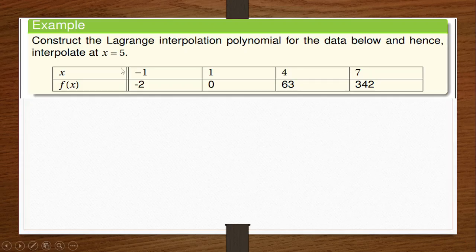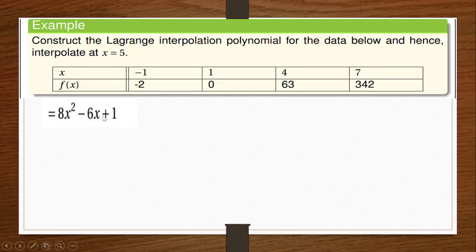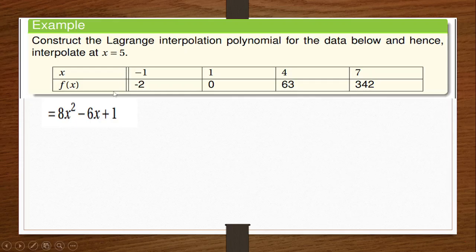With the Lagrangian, we are finding that if x is at five, what is its corresponding f of x. To find that, we have to create a formula — something like 8x squared minus 6x plus one. With this formula, whenever you give me any day, I can tell you the number of oranges. We are using Lagrangian because the intervals between the x values are not equal. That is why we have to generate a formula first, and then once we have it, any x value you give me, I can tell you its corresponding f of x value.